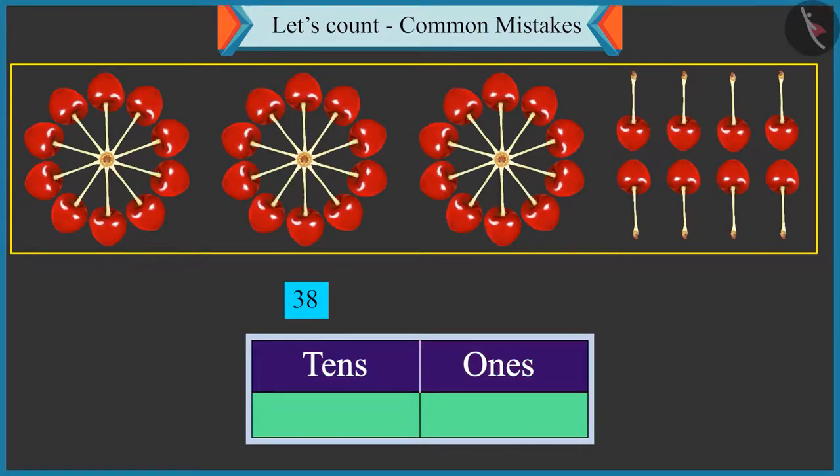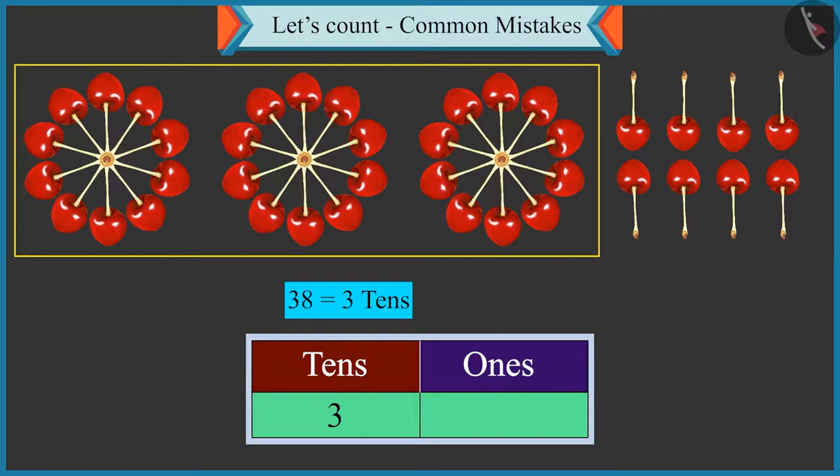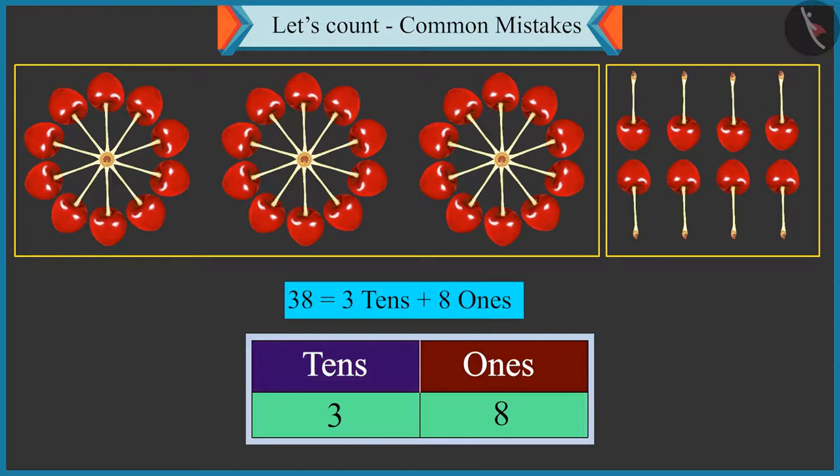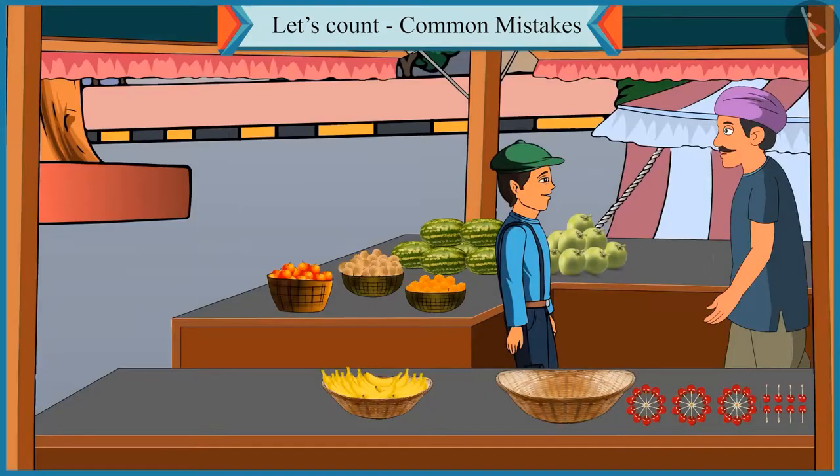Oh, yes. Three tens means three will come in the box of tens and there are eight single cherries, so eight will come in the box of ones. Very good.